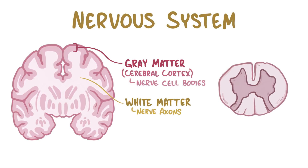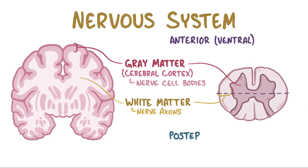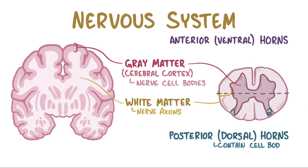In contrast, if you look at the cross-section of the spinal cord, the white matter is on the outside and the gray matter is on the inside, and overall it kind of looks like a butterfly. If we draw a horizontal line through the spinal cord, the front half is the anterior or ventral half, and the back half is the posterior or dorsal half. The butterfly wings are sometimes referred to as horns, so we have two dorsal horns that contain cell bodies for sensory neurons, and two ventral horns that contain cell bodies for motor neurons.